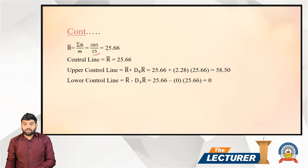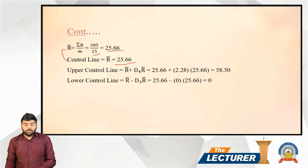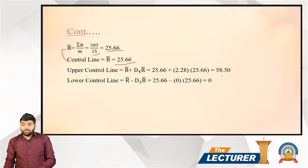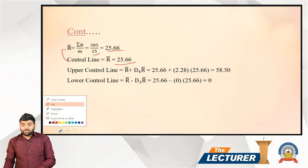For the R chart: the central line equals R-bar = 25.66. The UCL formula is R-bar plus D4 times R-bar = 25.66 plus 2.28 times 25.66, giving UCL = 58.50. For the LCL: R-bar minus D3 times R-bar = 25.66 minus 0 times 25.66 = 0. So the LCL of the R chart is 0.